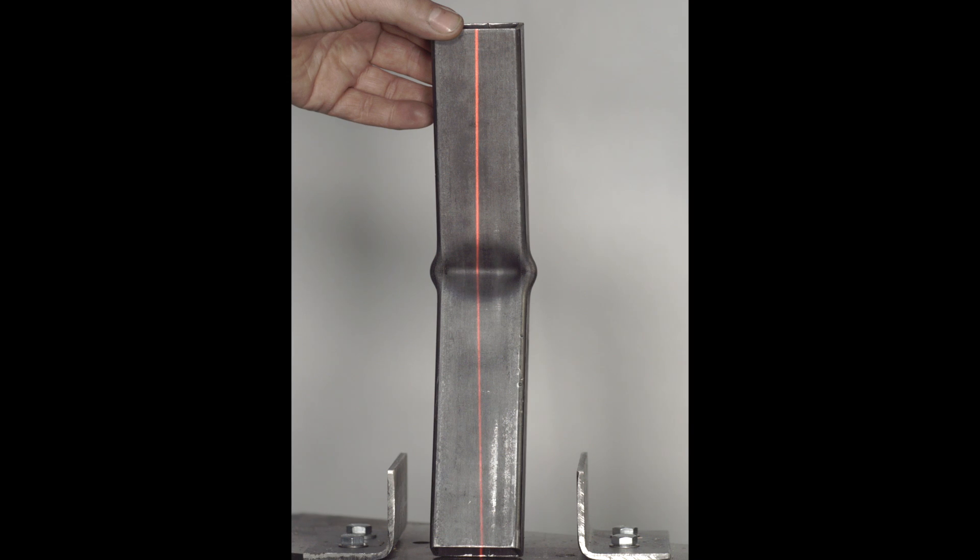Turning the specimen to the side, you can see that the deformation has localized to the mid-span of the specimen in a plastic hinge.